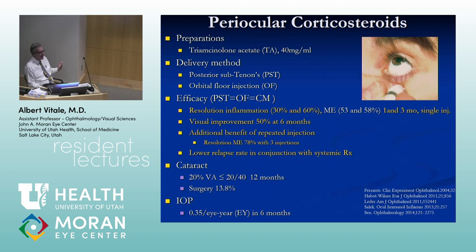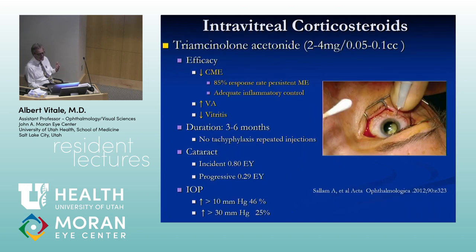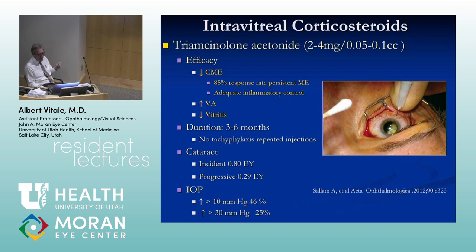Periocular steroids are effective in reducing inflammation and macular edema in greater than 50% of cases, with additional benefit for repeated injection. There is the risk of steroid-associated cataract and intraocular pressure elevation, which are not minimal. Similarly, intravitreal triamcinolone acetonide, used most frequently at 2–4 mg, is quite effective in reducing CME in about 85% of cases, improving vision and decreasing vitreous. Duration is about three to six months depending on whether the eye is vitrectomized. There is no tachyphylaxis. However, it induces cataract and IOP elevation more often; cataract requiring surgery occurs after the fifth injection in a large percentage of patients.